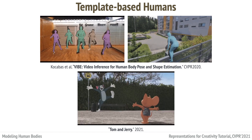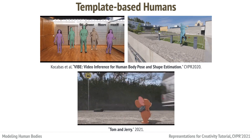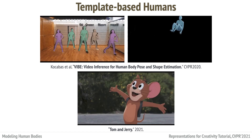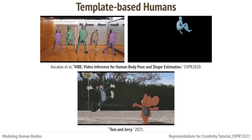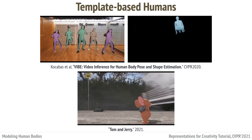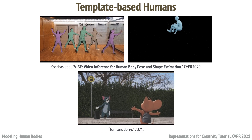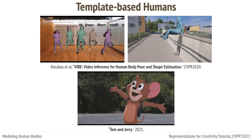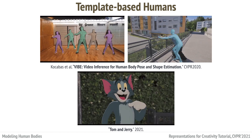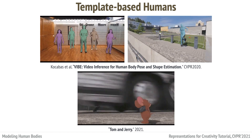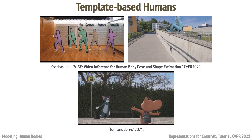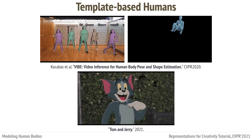However, template-based methods are difficult to recover the identity of the person, especially the clothing, because of the topology limits of the predefined fixed shape model.